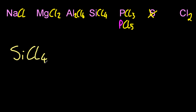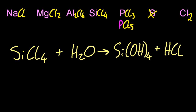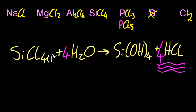Silicon tetrachloride — I just can't seem to get these ones into my head. It gives silicon hydroxide and hydrochloric acid when you balance it out. Hydrochloric acid is strong and silicon hydroxide is weak, so the solution is going to be acidic when you react water with silicon tetrachloride.